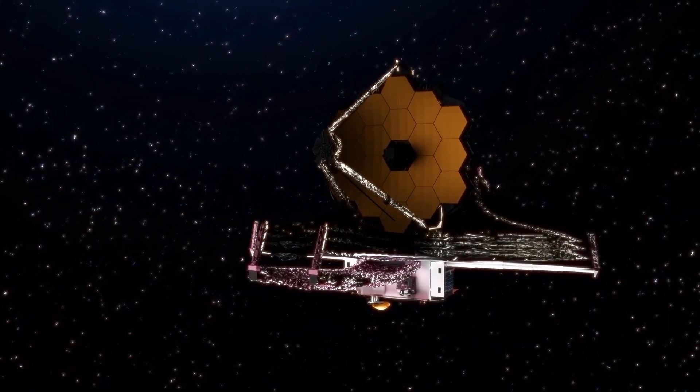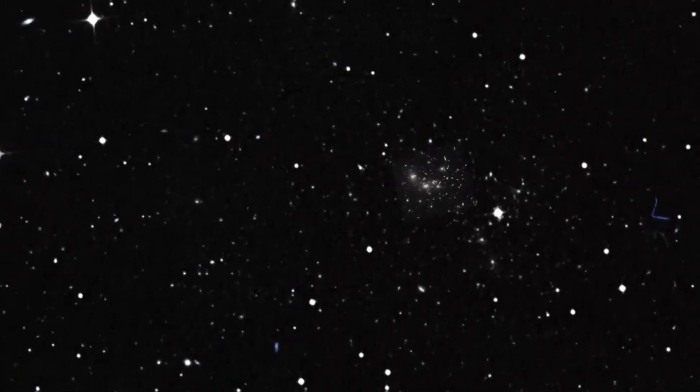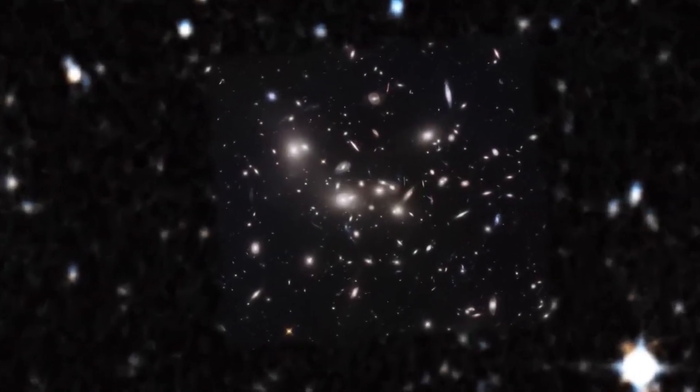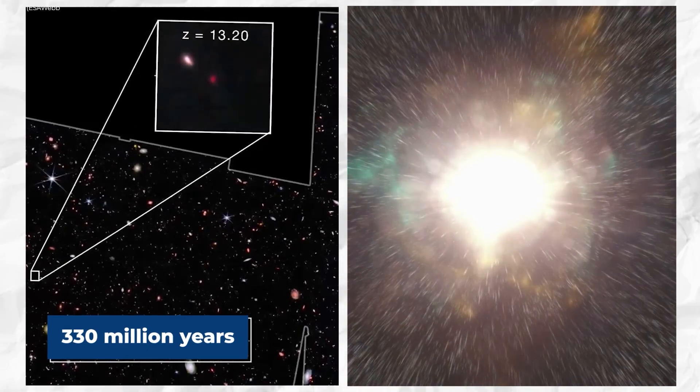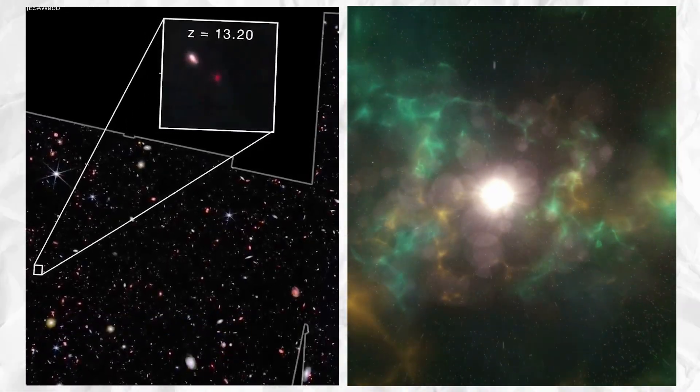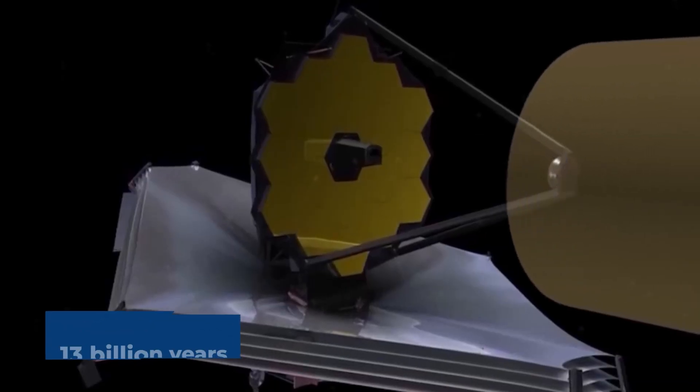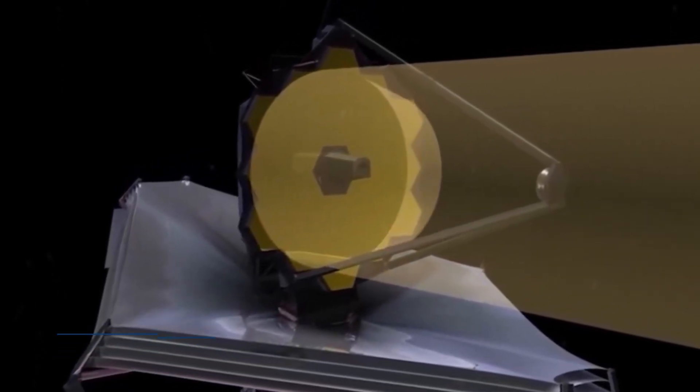However, the JWST has discovered two galaxies that constitute the second and fourth most distant such objects ever found. They're not only far away, but incredibly ancient. Each one dates to just 330 million years after the Big Bang, though it's an approximately predicted value. It took 13 billion years for the light the Webb Telescope caught from it to reach its lens. The light from these galaxies is ancient, about three times older than the Earth.